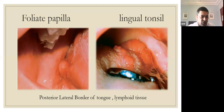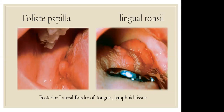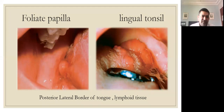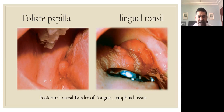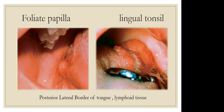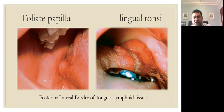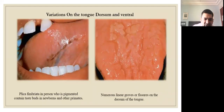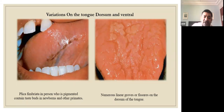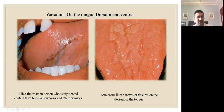On the lateral border, the lingual tonsil is lymphoid tissue seen on the lateral borders of the tongue. The plicae fimbriatae on the ventral aspect show some taste buds in young individuals and younger children. We also have foliate papillae on the lateral borders, and filiform and fungiform papillae on the dorsum.